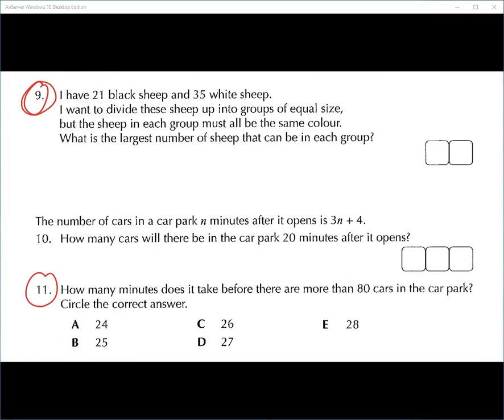Let's have Madam Safar. Question number nine, please. I have 21 black sheep and 35 white sheep. I want you to divide these sheep up into equal size groups, but the sheep in each group must be all the same colour. What is the largest number of sheep that can be in each group? So we have to think about what is the biggest number we can divide them by. 21 and 35. What do you call this? The highest common factor. So what's the biggest number 21 and 35 will divide by? Seven. That will give you three and that will give you five.